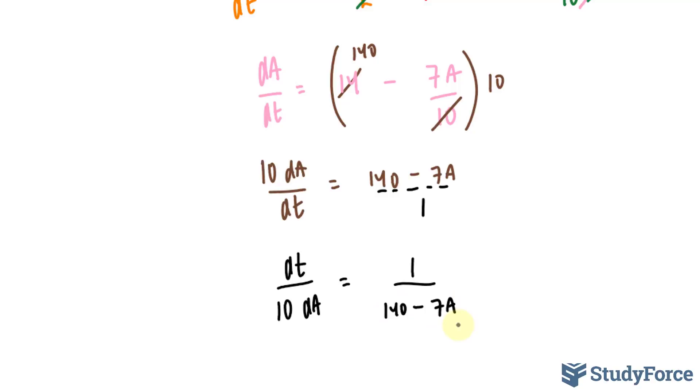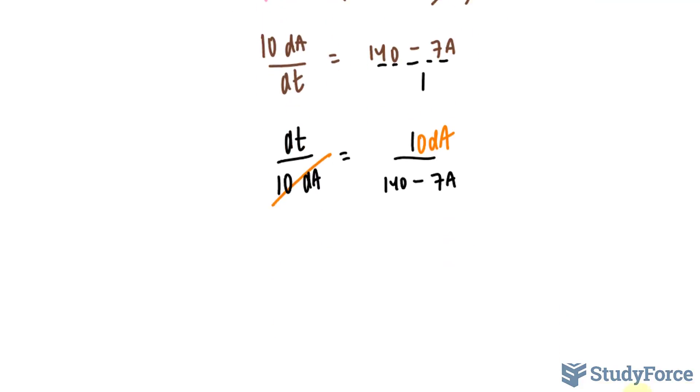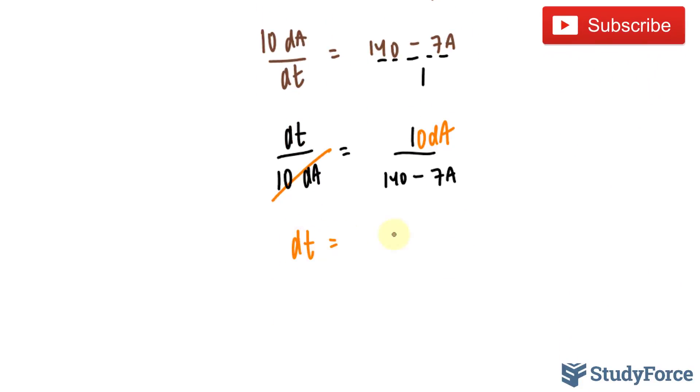The reason why I did this is because now I can multiply both sides by 10 dA. That will get rid of the 10 dA on the left side and it will appear on the right side. We have dt is equal to 10 over 140 minus 7A dA.